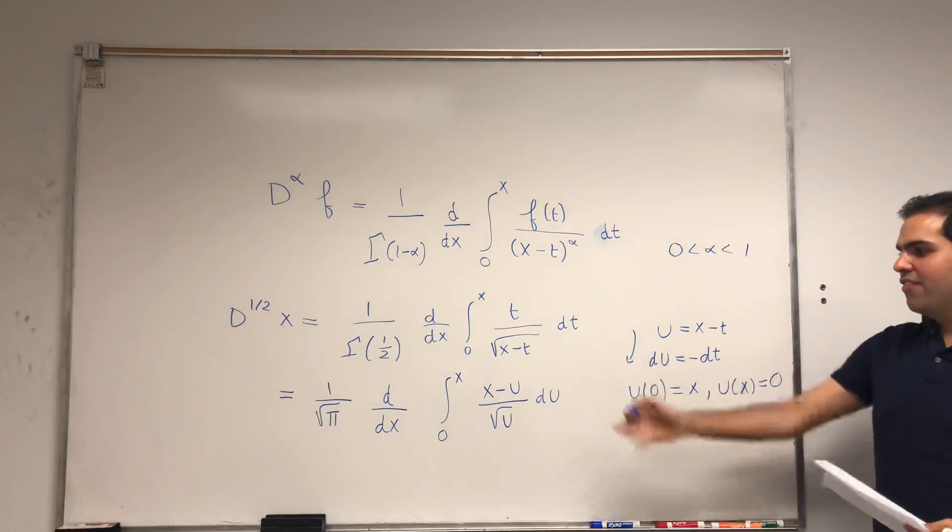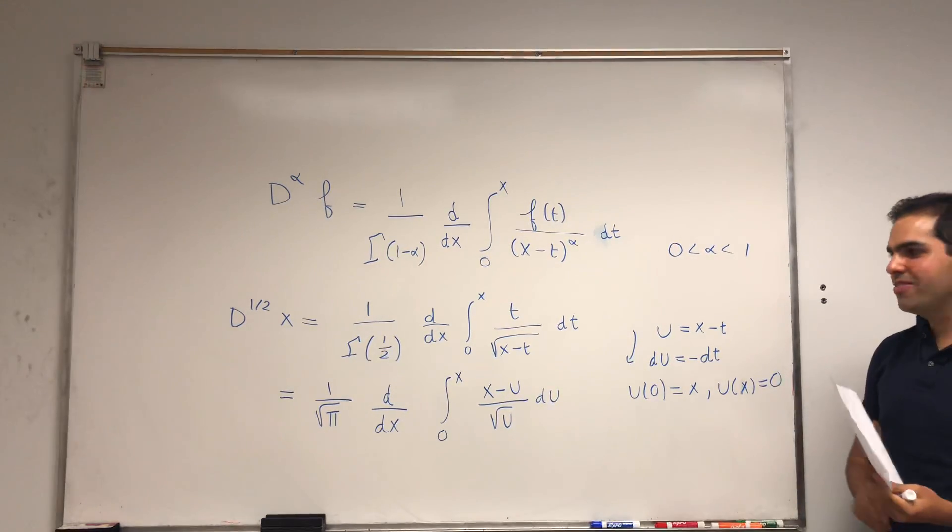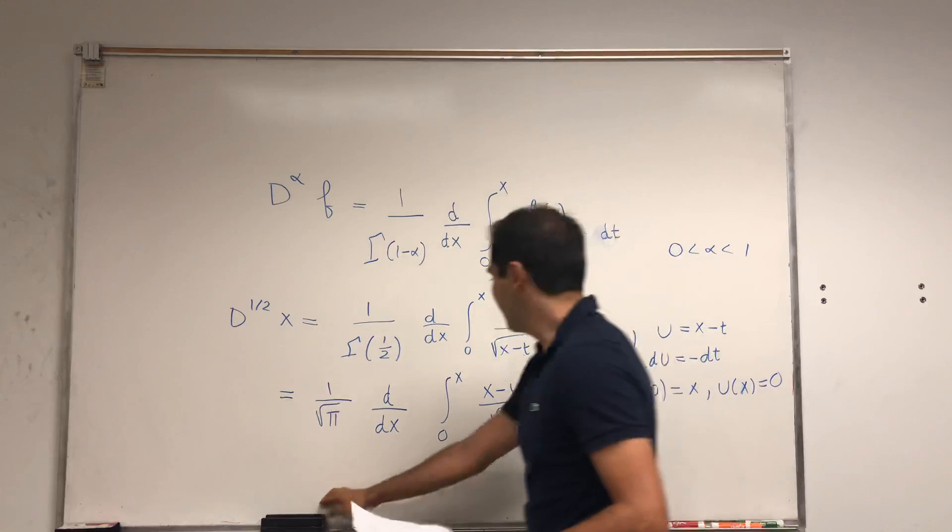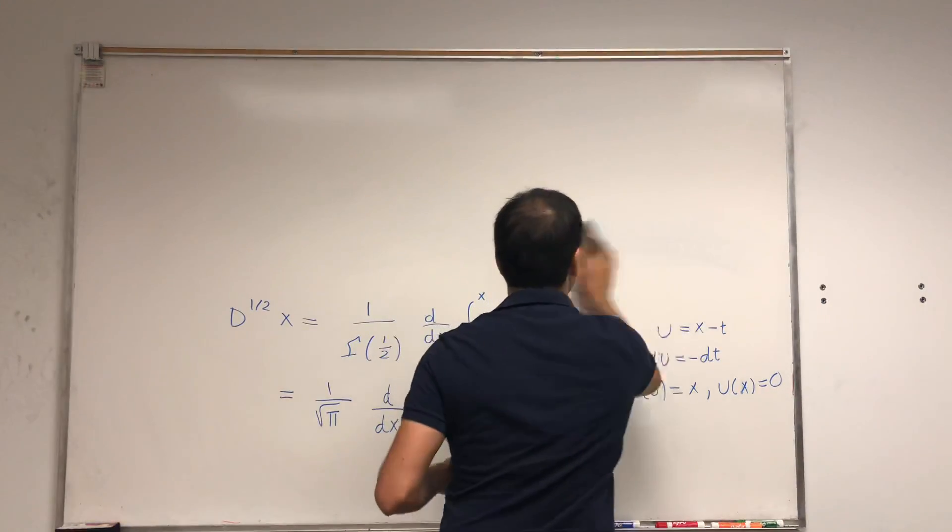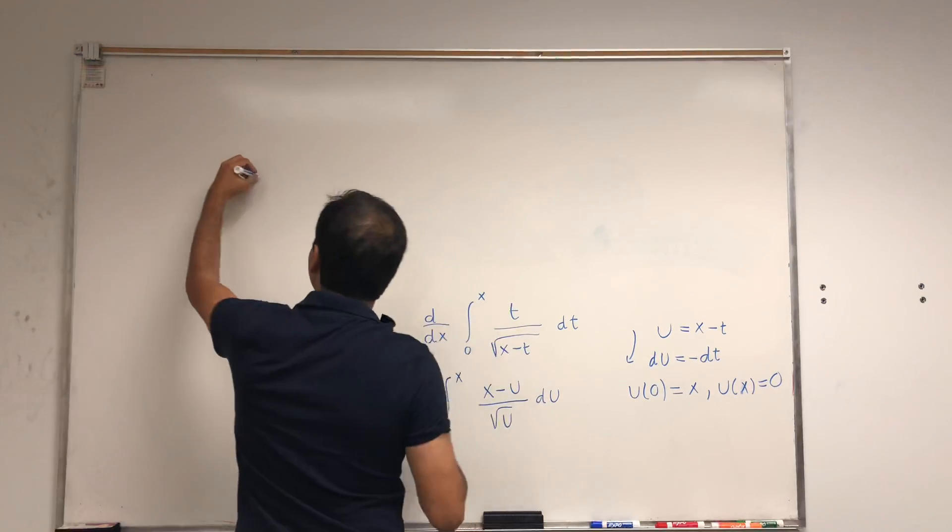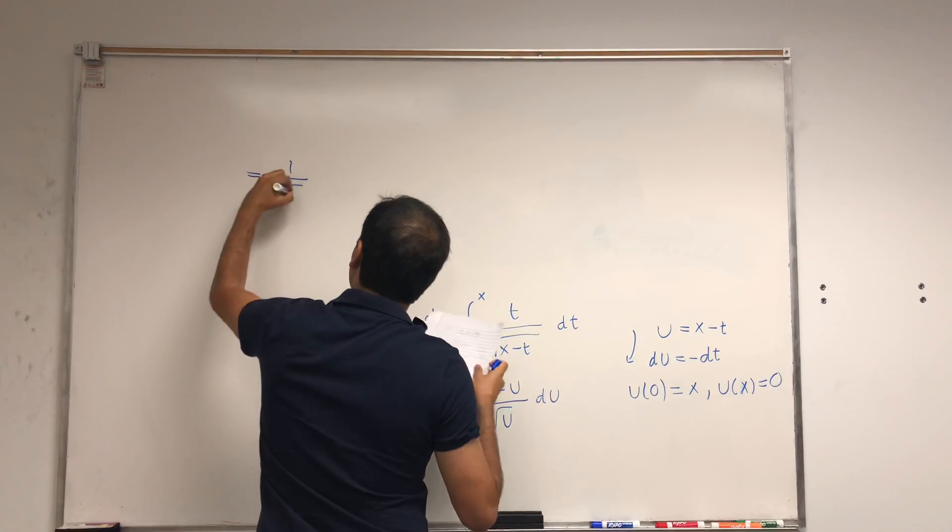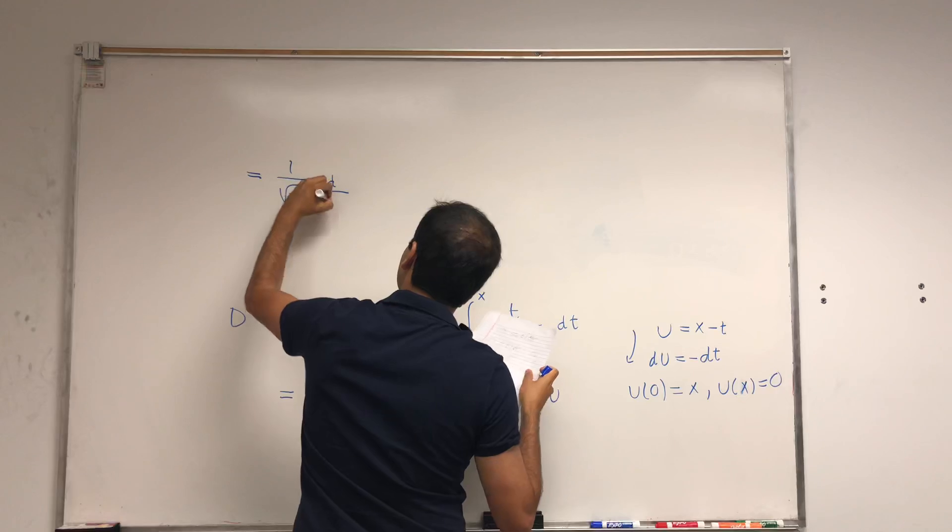And it turns out, once we have it in this formulation, it becomes easier to evaluate. Because, let's see, so it becomes one over square root of pi, d over dx.